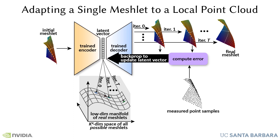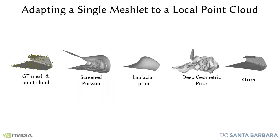At inference time, to fit a meshlet to a local point cloud, we simply fix the network weights and traverse the learned latent space to find the best match. Here, we compare our approach to others for the task of fitting a 3D mesh patch to a local point cloud.